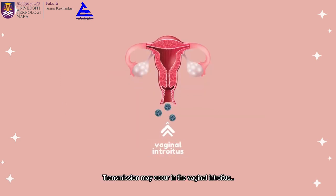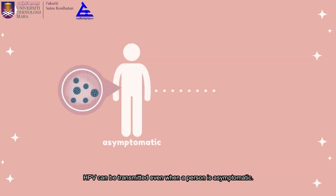Transmission may occur in the vaginal introitus and spread to another location by self-inoculation. HPV can be transmitted even when a person is asymptomatic.